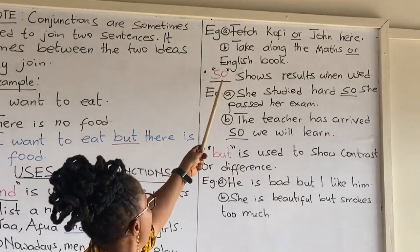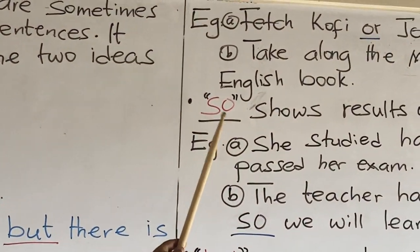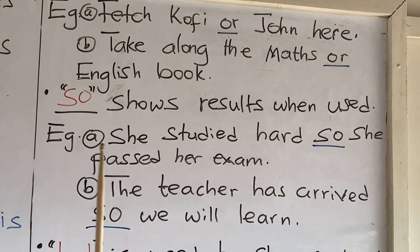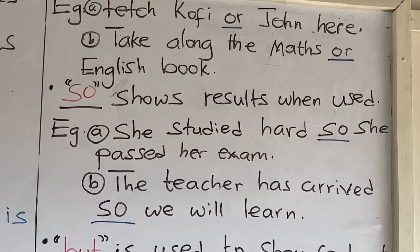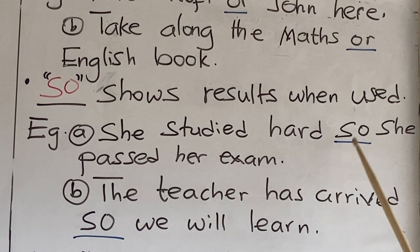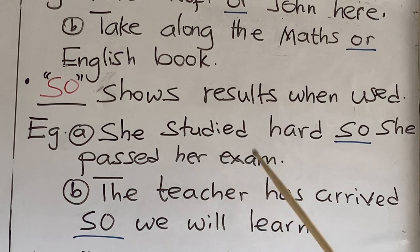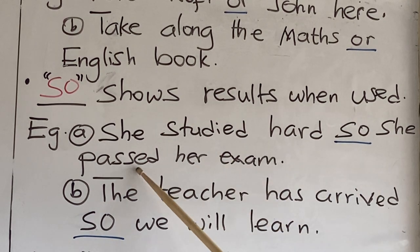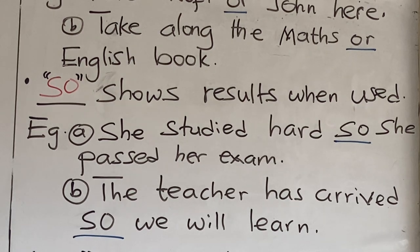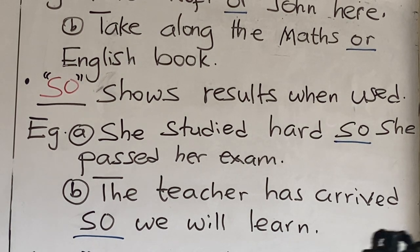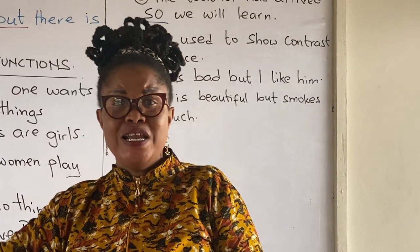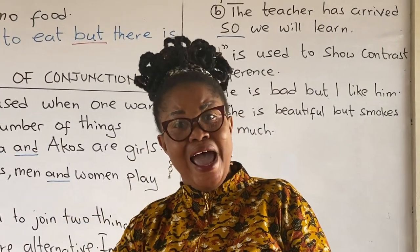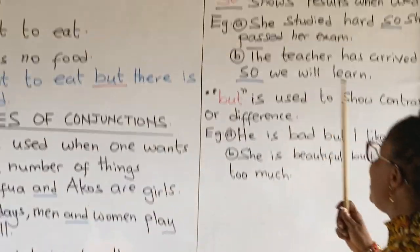Now, let's look at 'so' as a conjunction. 'So' shows results when used. Let's look at an example: She studied hard, so she passed her exam. The result here means because she studied hard, she passed her exam. 'So' is showing that result.